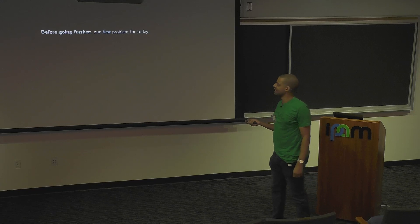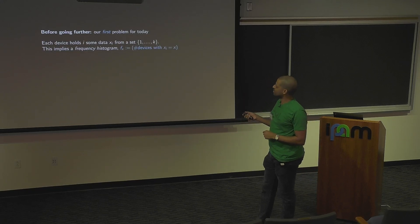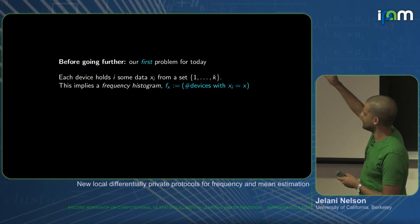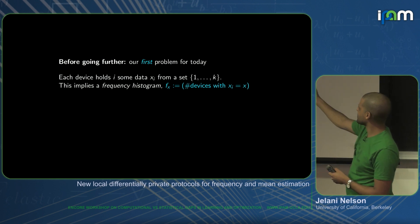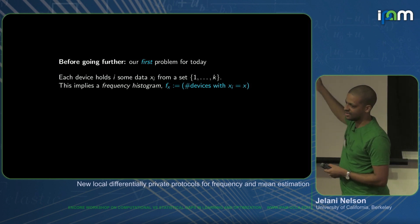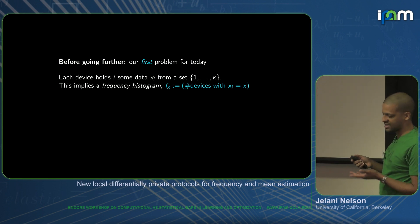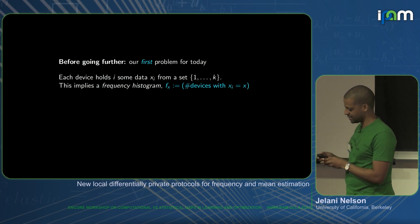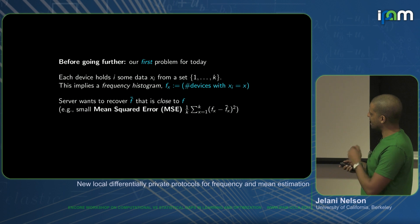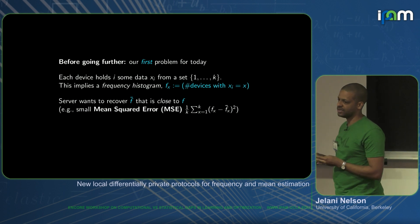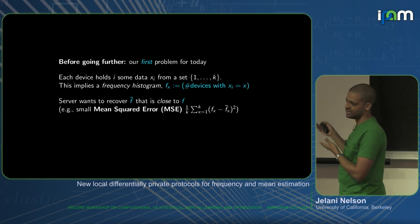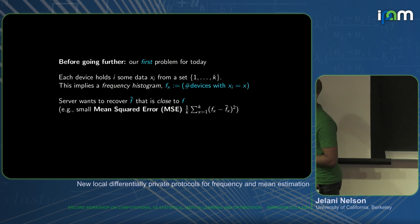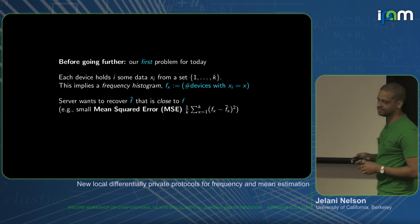I'm going to talk about two problems today. The first is histogram estimation. There are n devices, each with a data element, and there's a histogram F: F sub x is the number of devices whose data is x. Each device sends a randomized message to the server, and the server wants to estimate this histogram — this vector of counts. The error will be measured as the L2 distance, specifically the average squared distance between the true count and the estimated count F tilde.